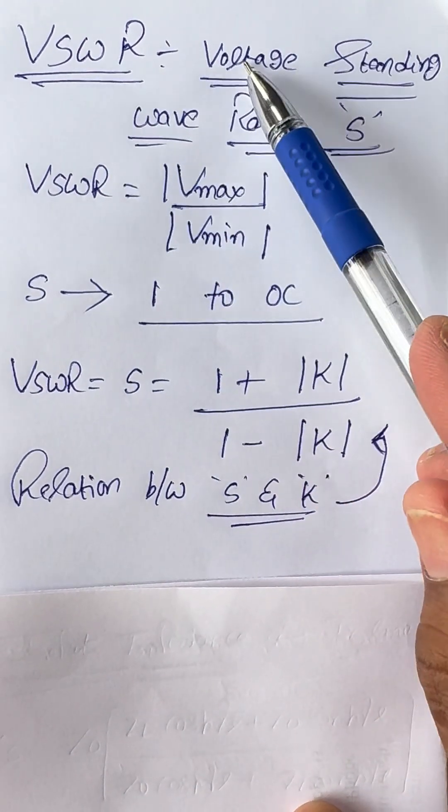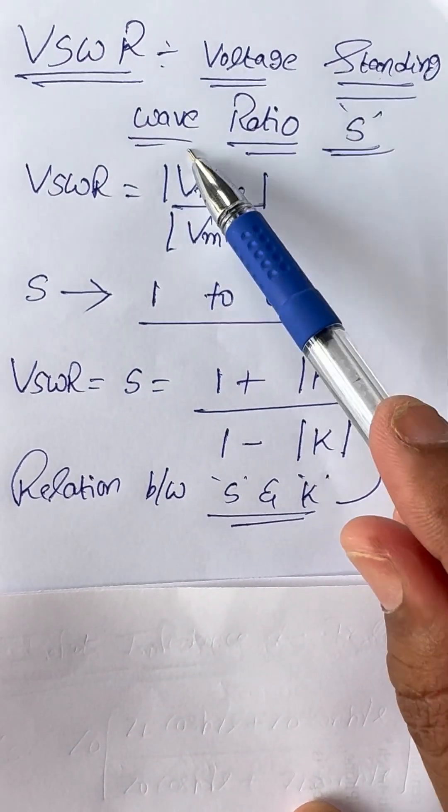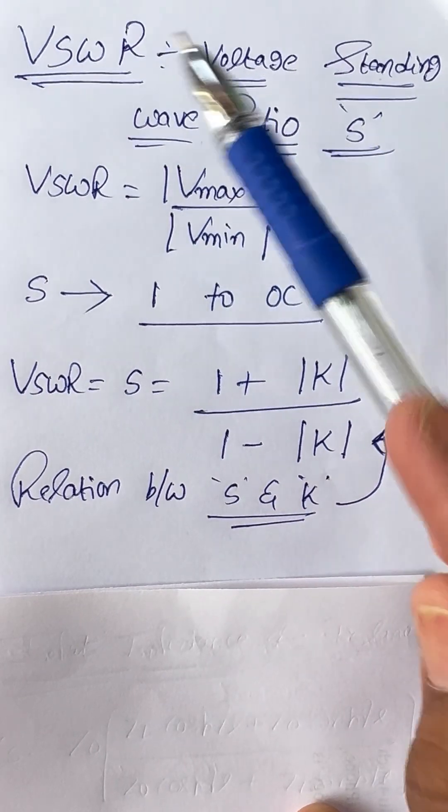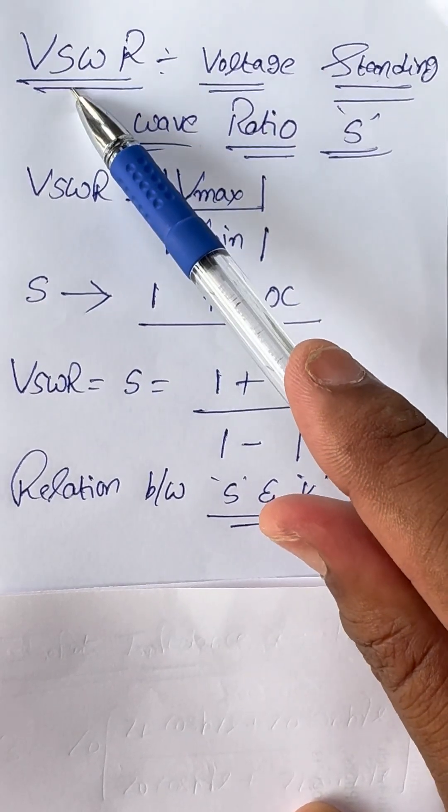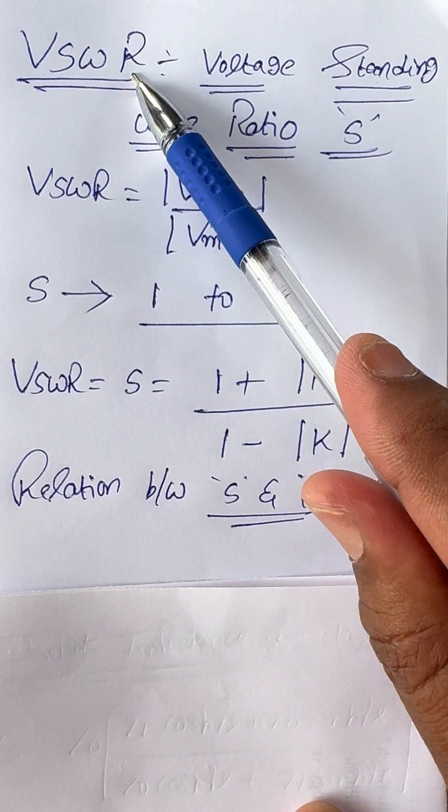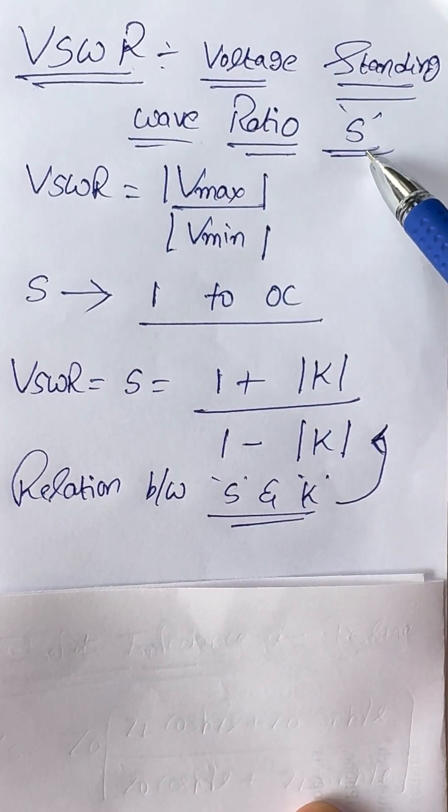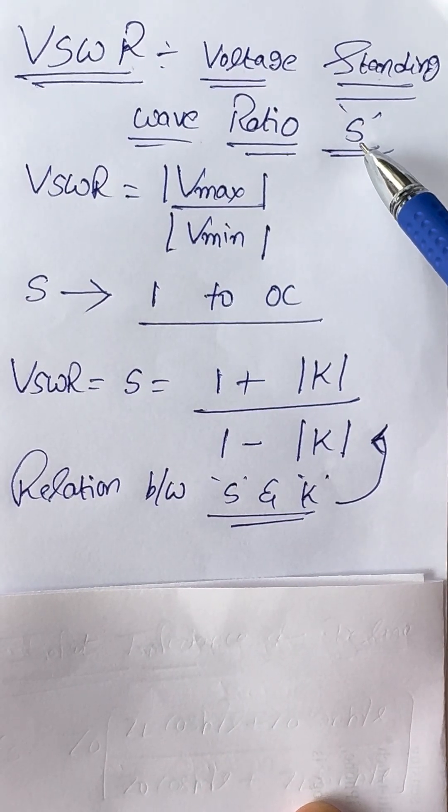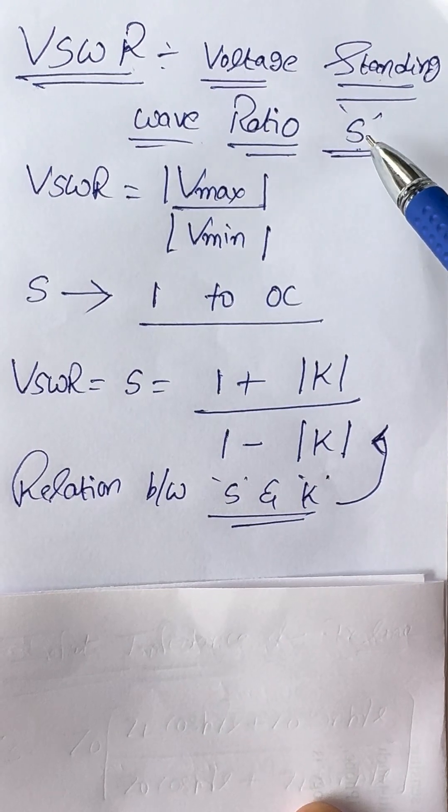VSWR means voltage standing wave ratio, and it is represented in terms of S.